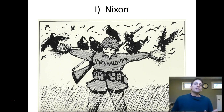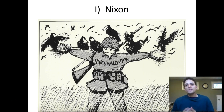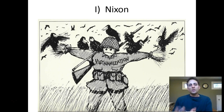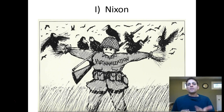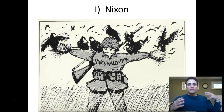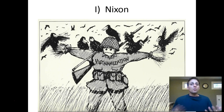Nixon's first big foreign policy issue he has to deal with is Vietnam. What Nixon is going to do is follow a policy known as Vietnamization, which means he's slowly going to turn over the war from U.S. ground soldiers to Vietnamese ground soldiers. We've seen this in recent wars too — we did it in Iraq and Afghanistan. The policy is to get American ground troops out. While we're there, we train South Vietnamese soldiers to continue the war to stop communist expansion, but we're taking American troops out of Vietnam.